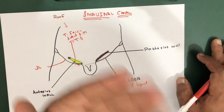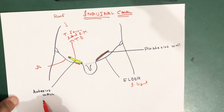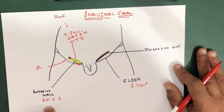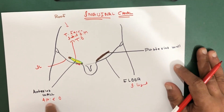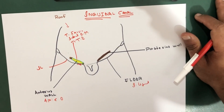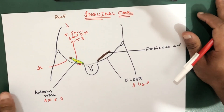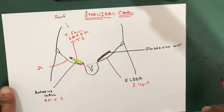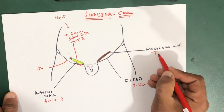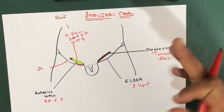The anterior wall is formed by the aponeurosis of the external oblique muscle, which is reinforced laterally by the internal oblique muscle. The posterior wall is formed by only one structure: the transversalis fascia.